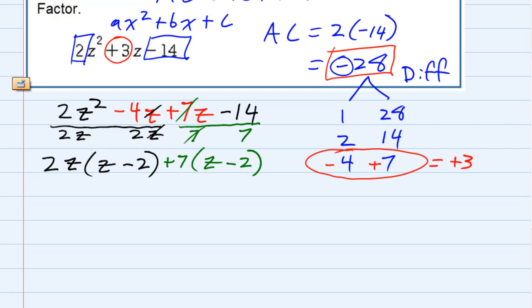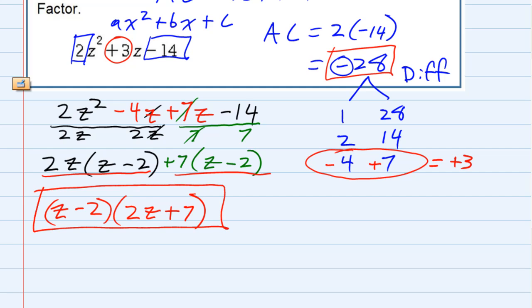And now, since I have two terms and they both share the z minus 2, I can factor out the z minus 2. If I remove the z minus 2 from the first term, I have only the 2z left. And if I remove the z minus 2 from the second term, I have just the plus 7 left. So this is our factored expression. Again, we were using the AC method on this one.